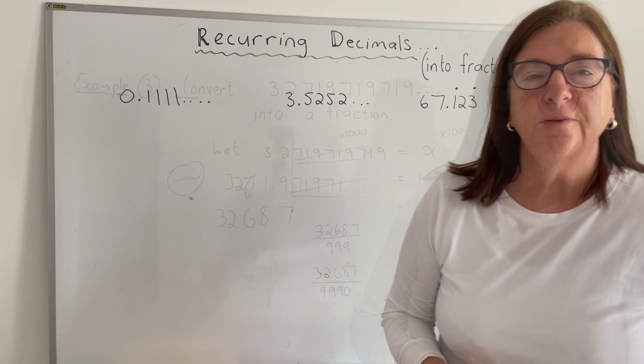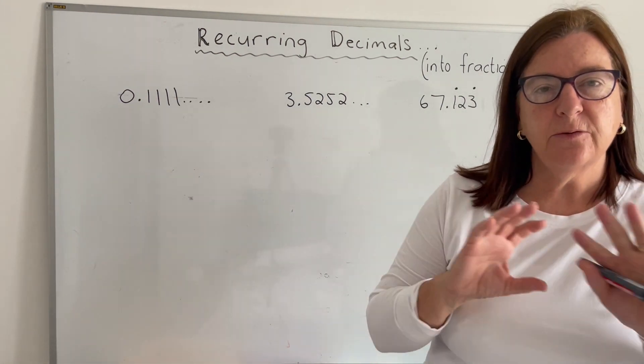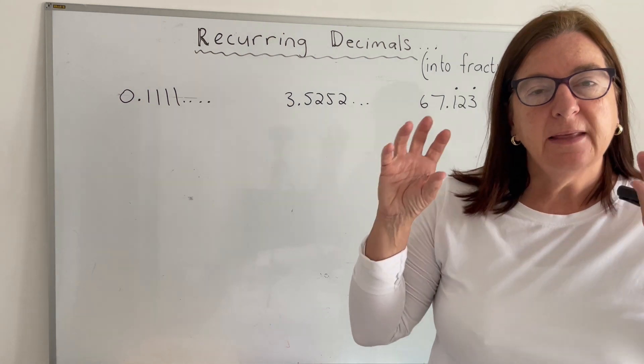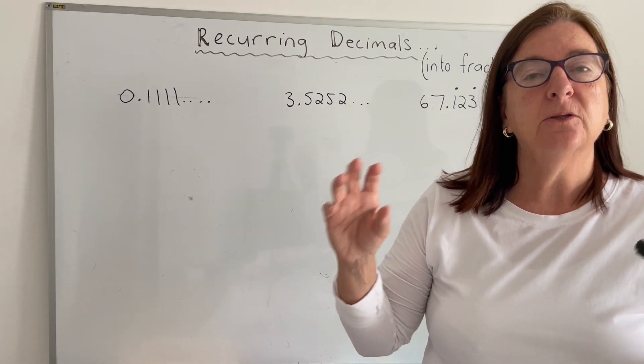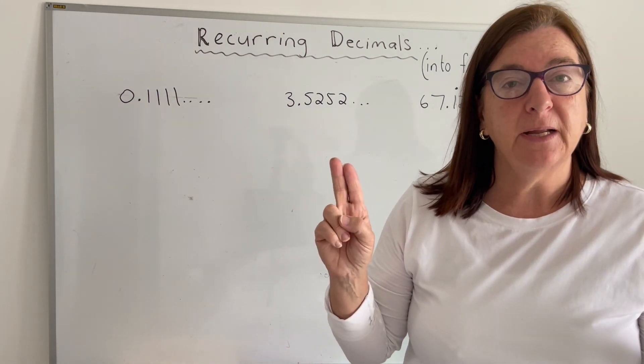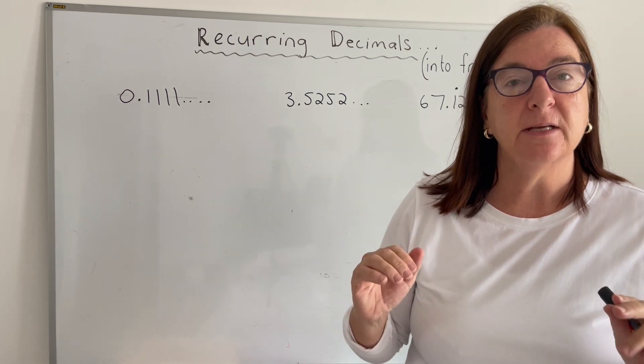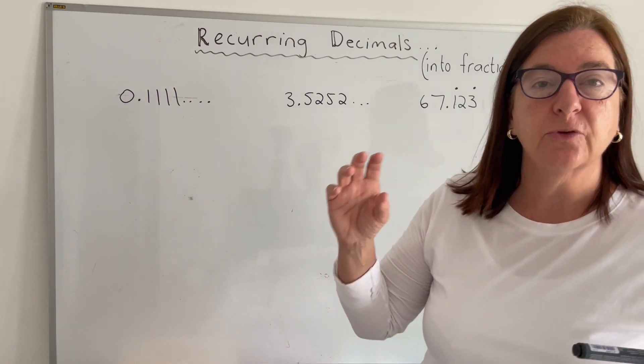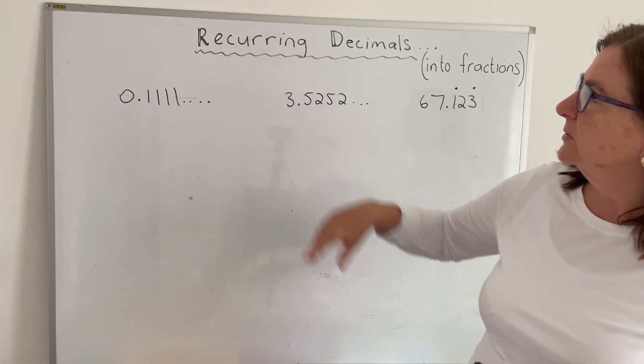Now to summarize. To finally summarize here, whenever you see recurring decimals, you want to convert it to a fraction, we let the original question equal to x and then you've got to multiply it by a certain number and then subtract. Now the number that we multiplied by varies depending on how many decimals recur. So let's look at these three examples here.